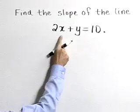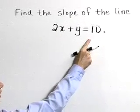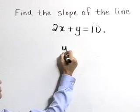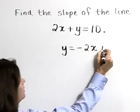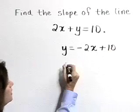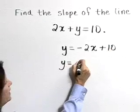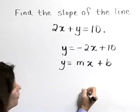So let's isolate y by subtracting 2x from both sides. Thus the equation becomes y is equal to negative 2x plus 10. So we have the equation in y equals mx plus b form.